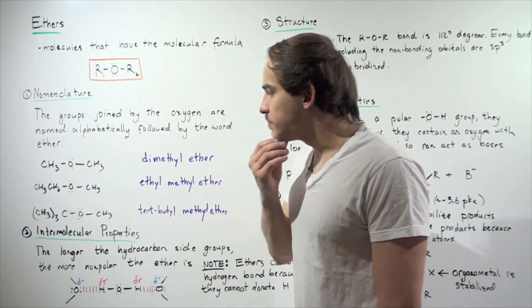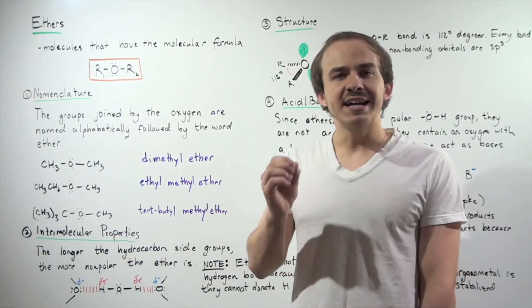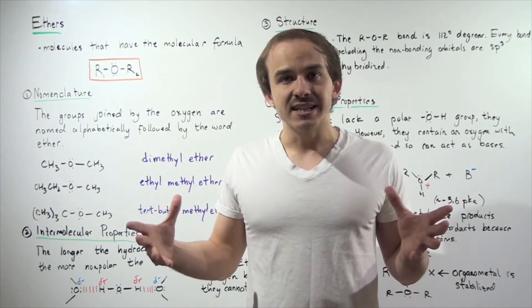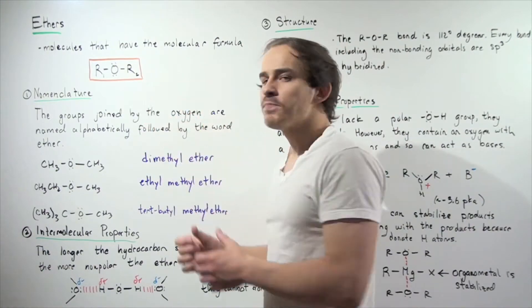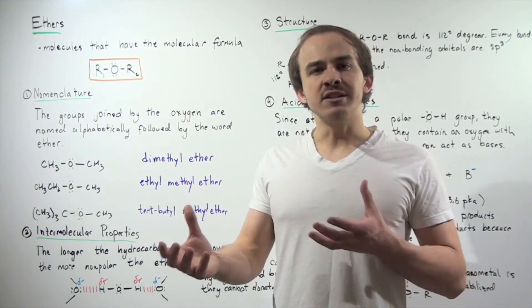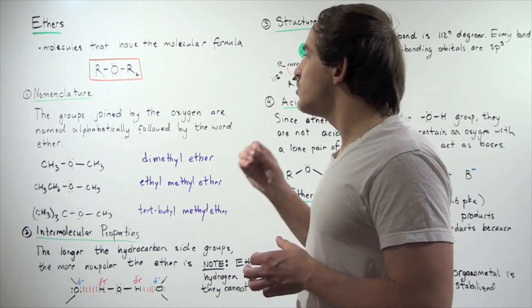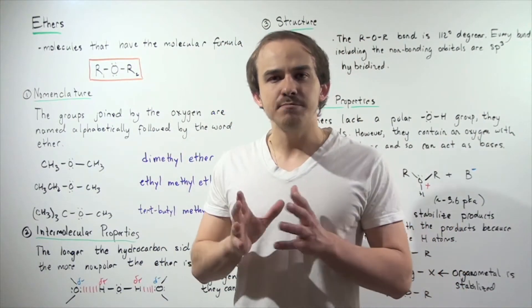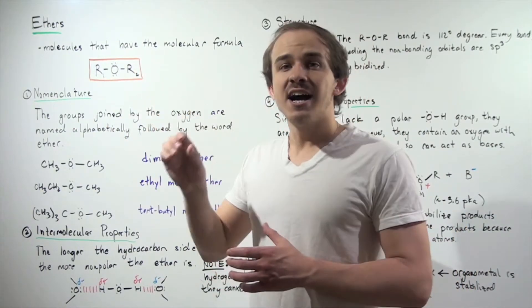Let's look at the second bullet point: intermolecular properties and intermolecular forces. Recall that intermolecular bonds are bonds between different adjacent molecules. Let's suppose I take ether and add water to the mixture. What types of bonds exist between the two molecules? Notice that ether does not have a polar OH bond, which means it cannot donate H molecules, so it cannot hydrogen bond itself.